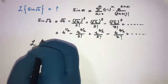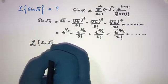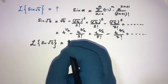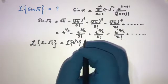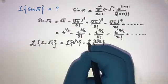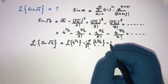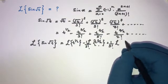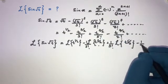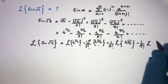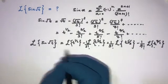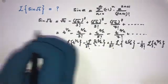We can write the Laplace transform term by term: L{t^(1/2)} minus (1/3!) L{t^(3/2)} plus (1/5!) L{t^(5/2)} minus (1/7!) L{t^(7/2)} plus so on.